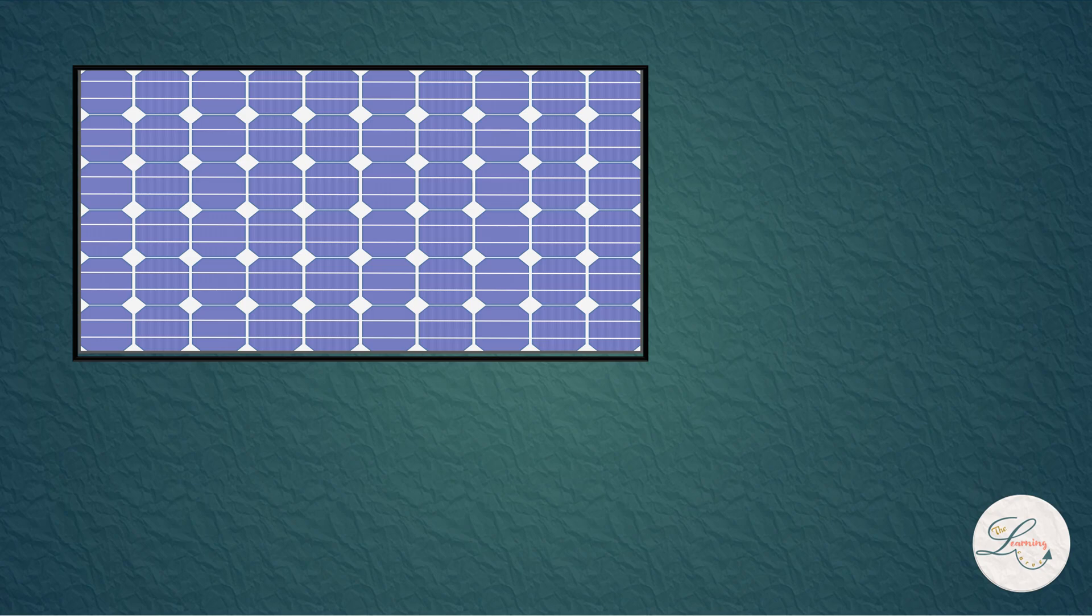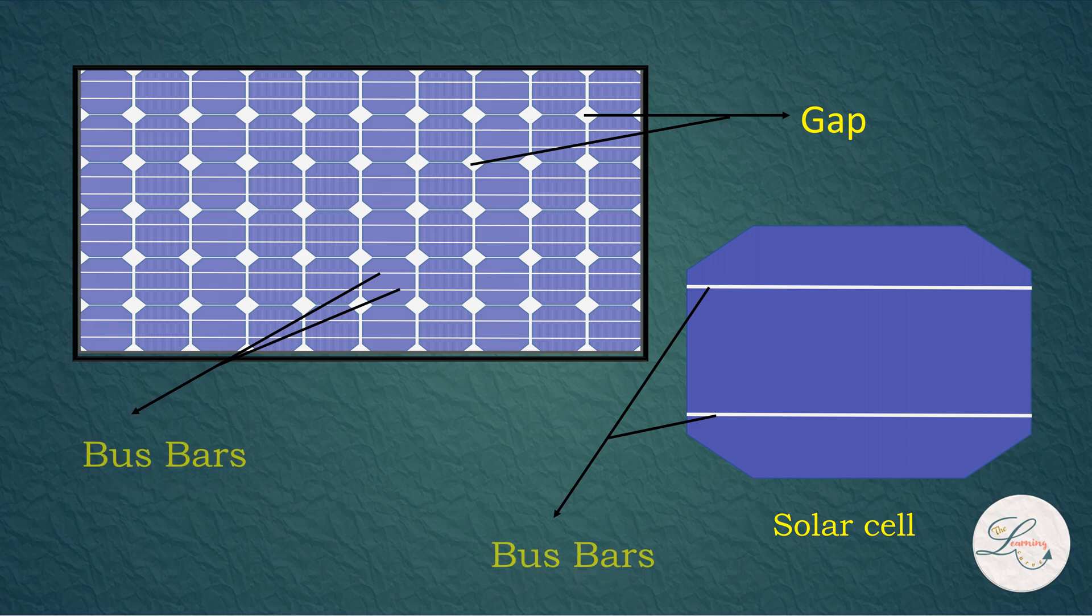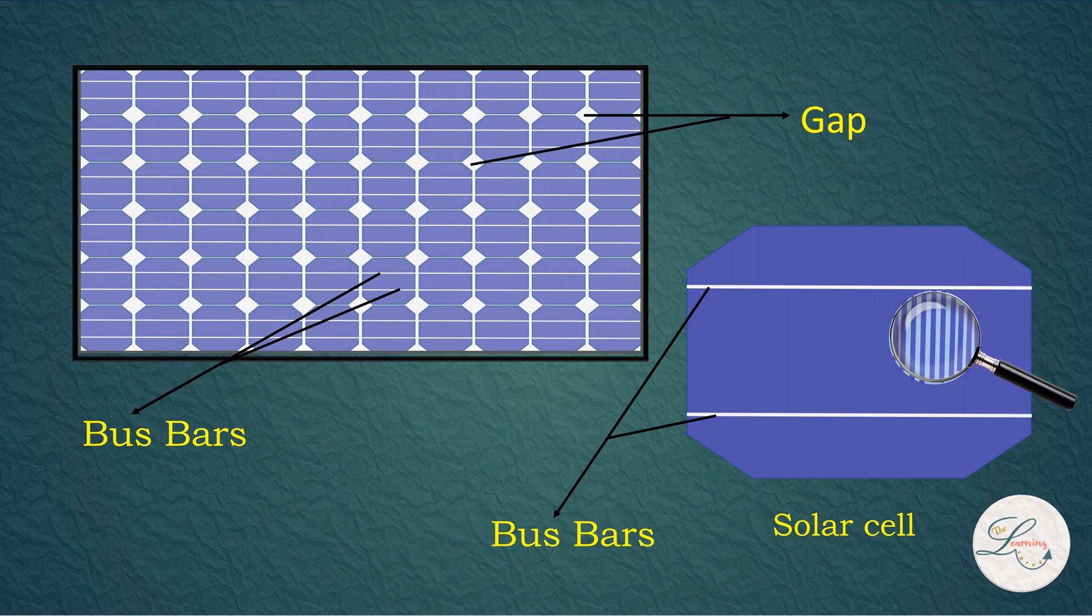If you observe the solar panel closely, you can see three important things. First, a gap is maintained between two cells to accommodate any kind of expansion when it is exposed to high temperature. Second, vertical lines made of high conductivity wires known as busbars are used to carry current. Multiple cells are connected in series through this busbar. Third, perpendicular to the busbar, there are thin lines within the solar cells known as fingers. They collect current and deliver it to the connected busbar.